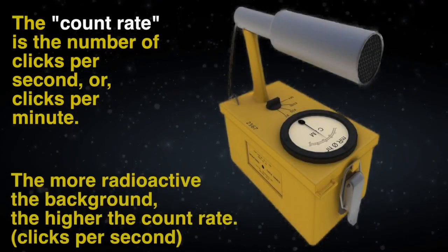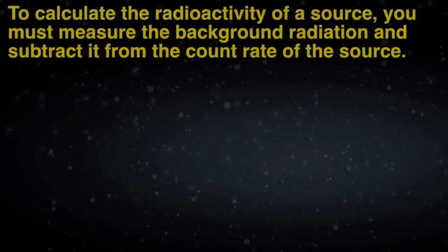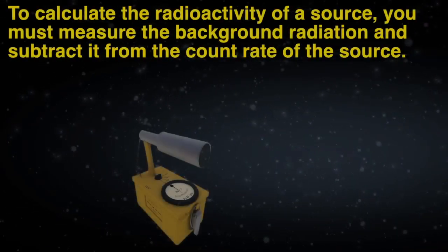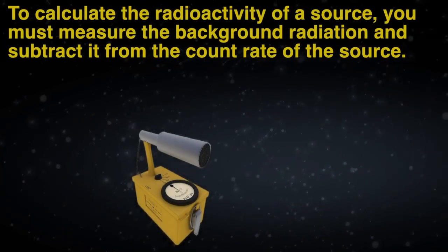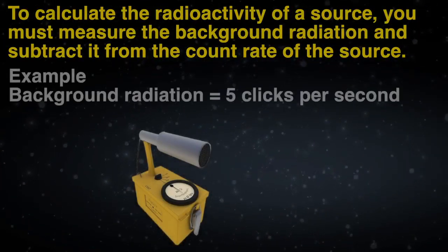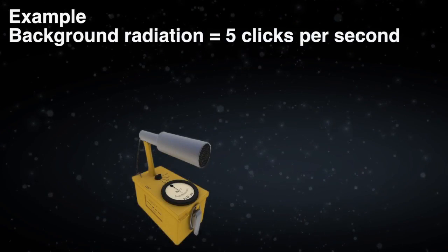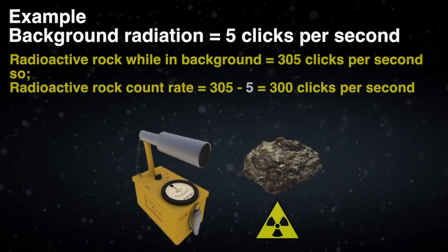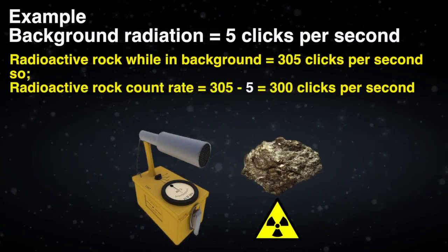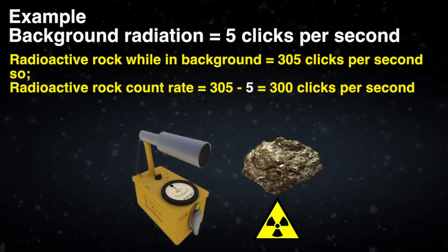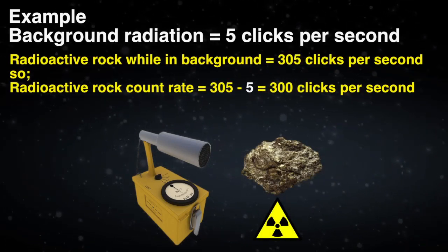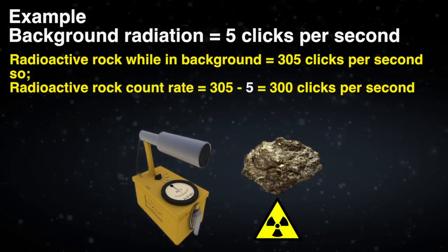The more radioactive the background, the higher the count rate. To calculate the radioactivity of a source, you must measure the background radiation and subtract it from the count rate of the source. Example: background radiation equals 5 clicks per second; radioactive rock while in the background equals 305 clicks per second. So the radioactive rock count rate equals 305 minus 5, which equals 300 clicks per second.